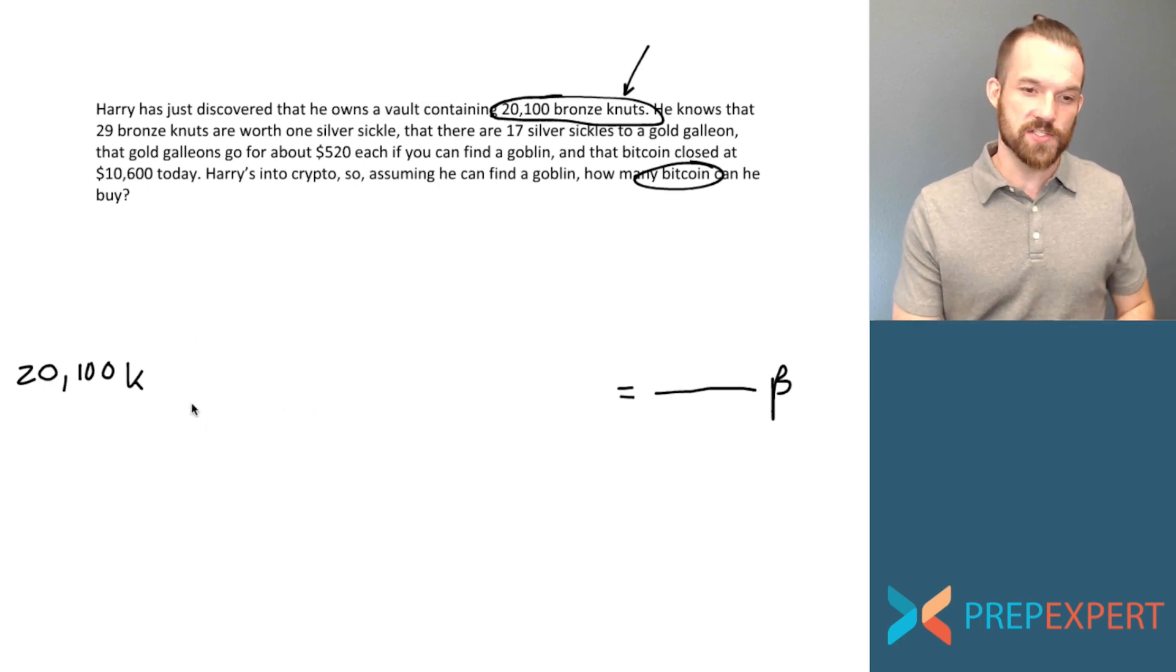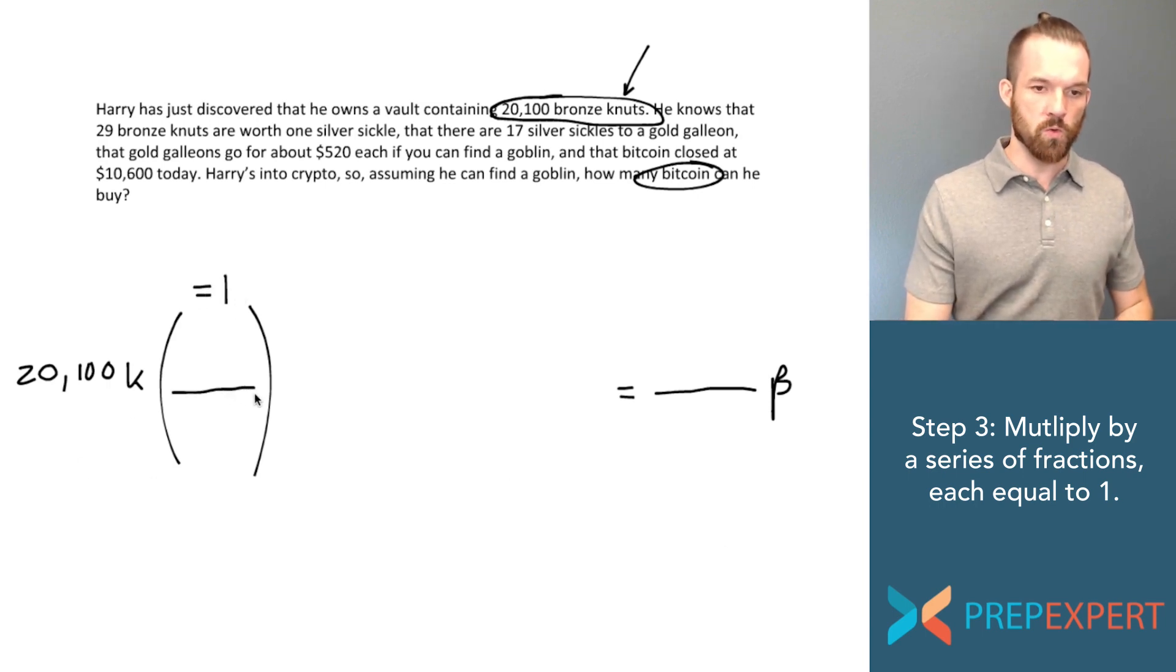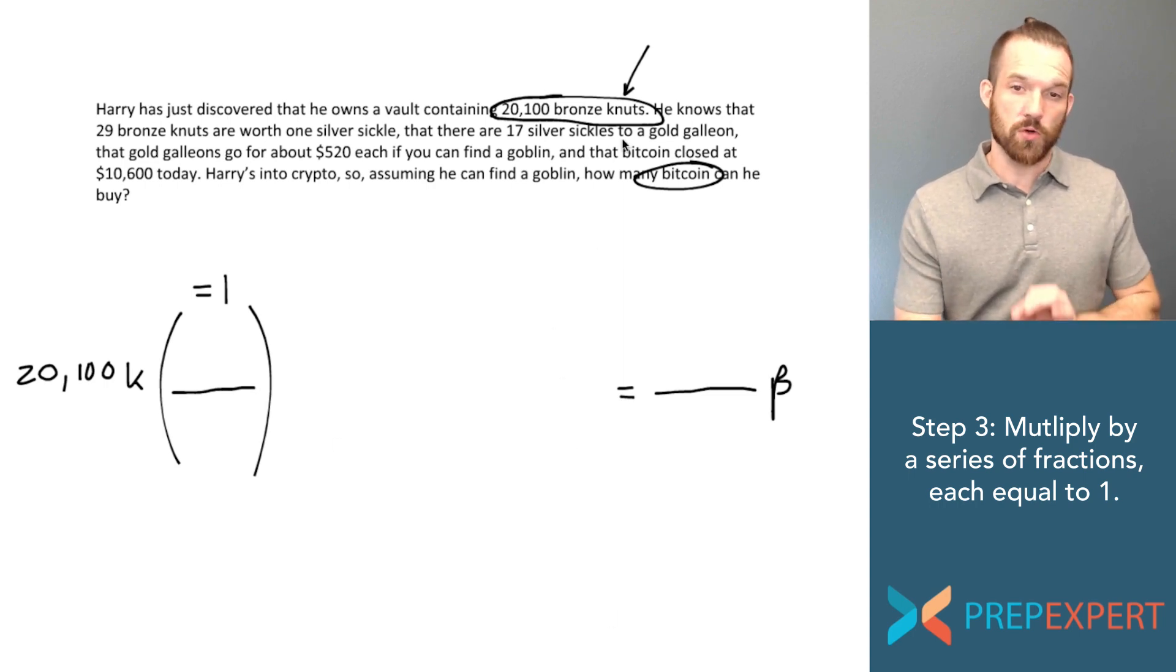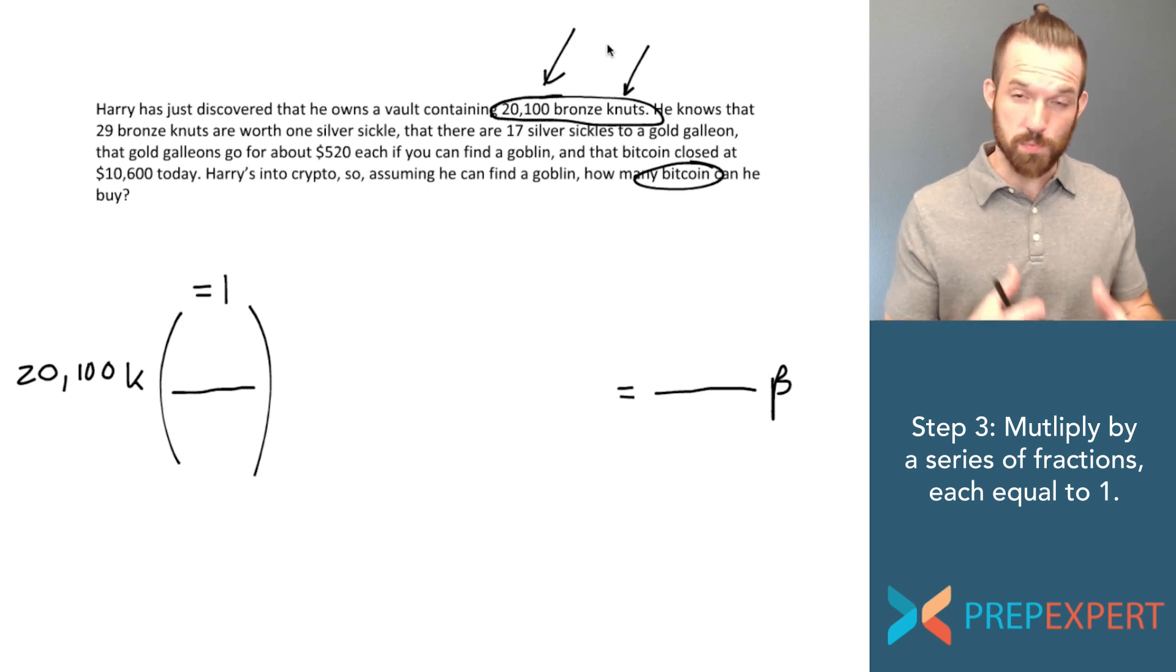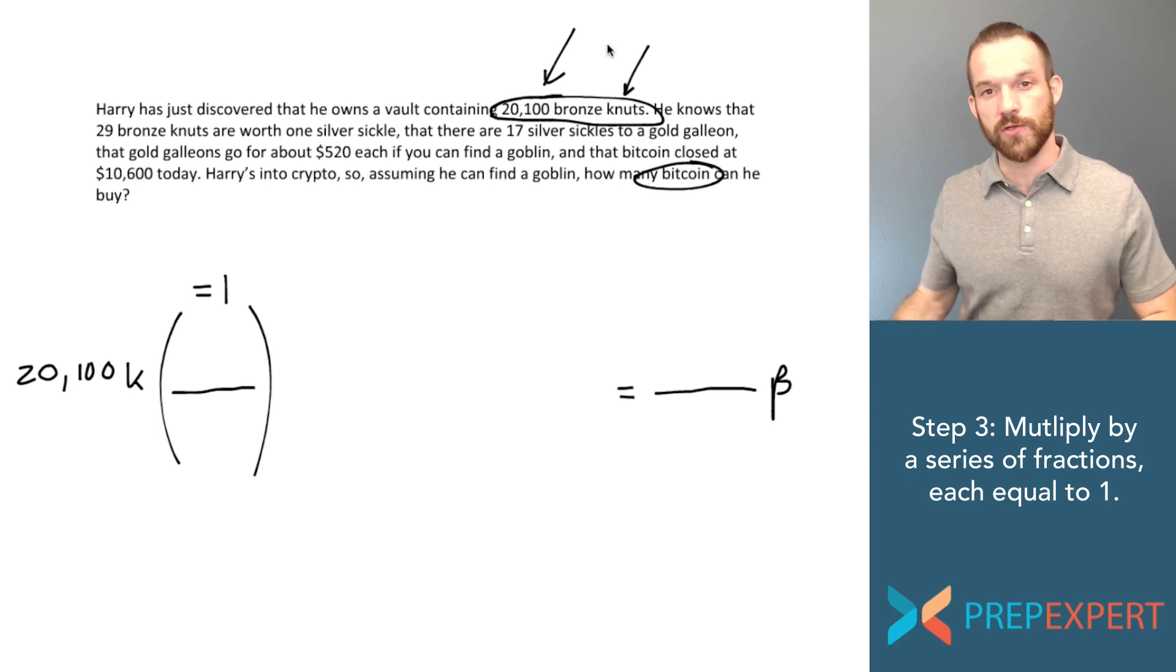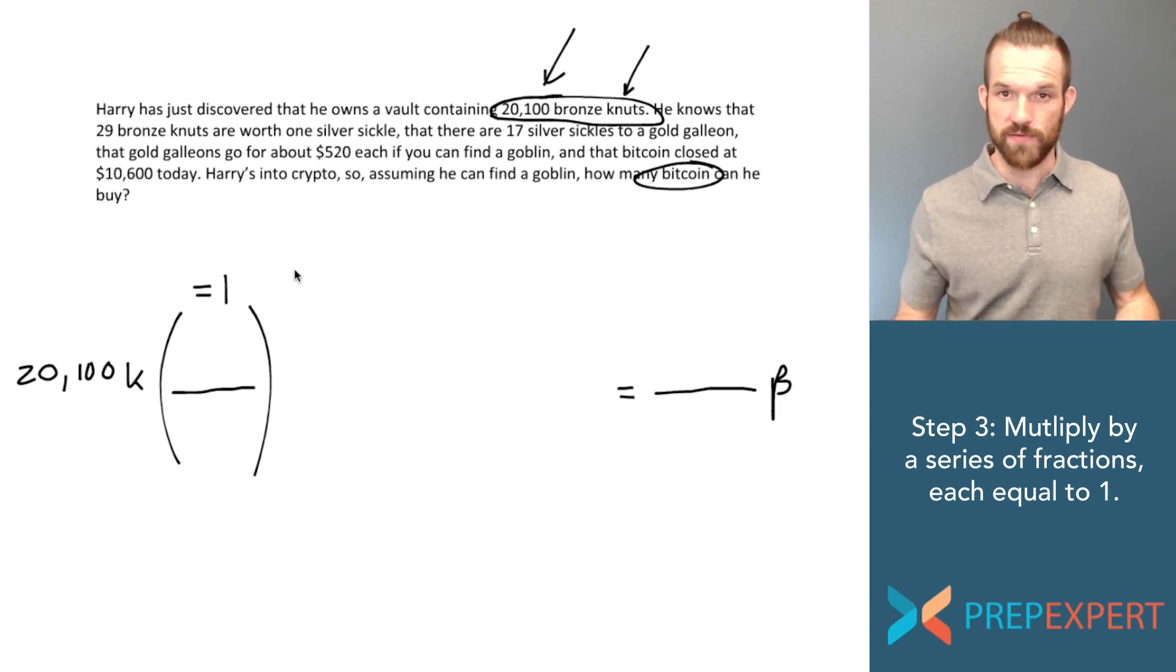Now I'm gonna multiply by a series of fractions. Each one of these fractions needs to be equal to one. The point of making each fraction equal to one is that I do not want to change the value of Harry's money here. What I'm trying to do is express that same value but in different units. So because I don't want to change the value everything that I multiply needs to be equal to one. If you multiply any quantity by something that's equal to one you don't change the value of the quantity. You just change the way it's expressed.